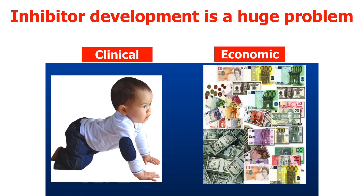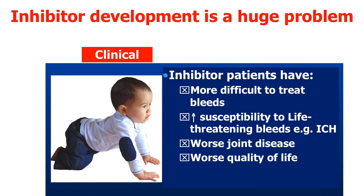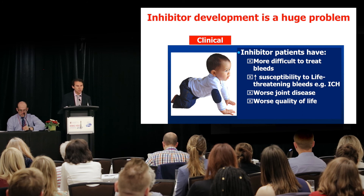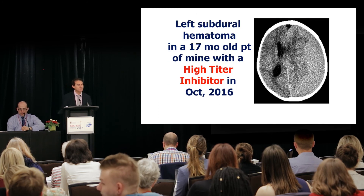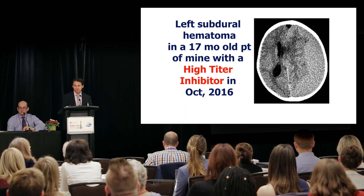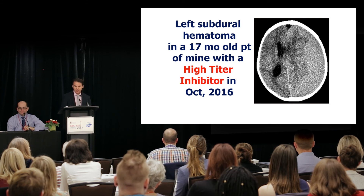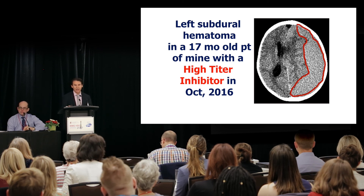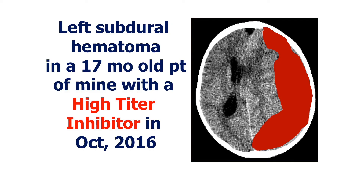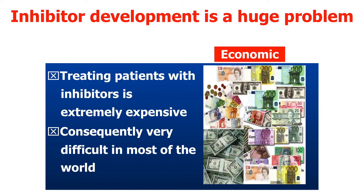Inhibitor development is a huge problem with both clinical and economic ramifications. Clinically, inhibitor patients have more difficult-to-treat bleeds, increased susceptibility to life-threatening bleeds such as intracranial hemorrhages. They develop worse joint disease and worse quality of life. For example, we had a patient at the Hospital for Sick Children who, in October of last year, when he was 17 months of age and had a high-titer inhibitor, developed a left subdural hematoma — a big bleed in the head. Treating patients with inhibitors is also extremely expensive, and for much of the world, it's impossible because it's just too expensive.